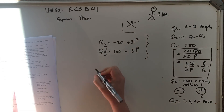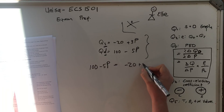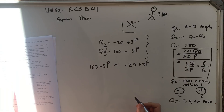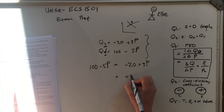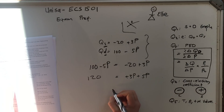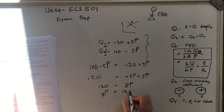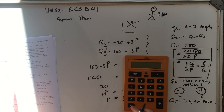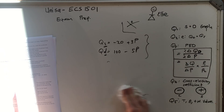It looks a little confusing but it's actually the easiest three marks of the exam. Equilibrium is where quantity demanded equals quantity supplied — they are the same. So you set QD equal to QS: 100 minus 5P equals minus 20 plus 3P. Put all the P's on one side: minus 5P goes over and becomes plus 5P, giving 3P plus 5P. The minus 20 goes the other side, becoming positive 20, so 120. That gives you 8P equals 120.